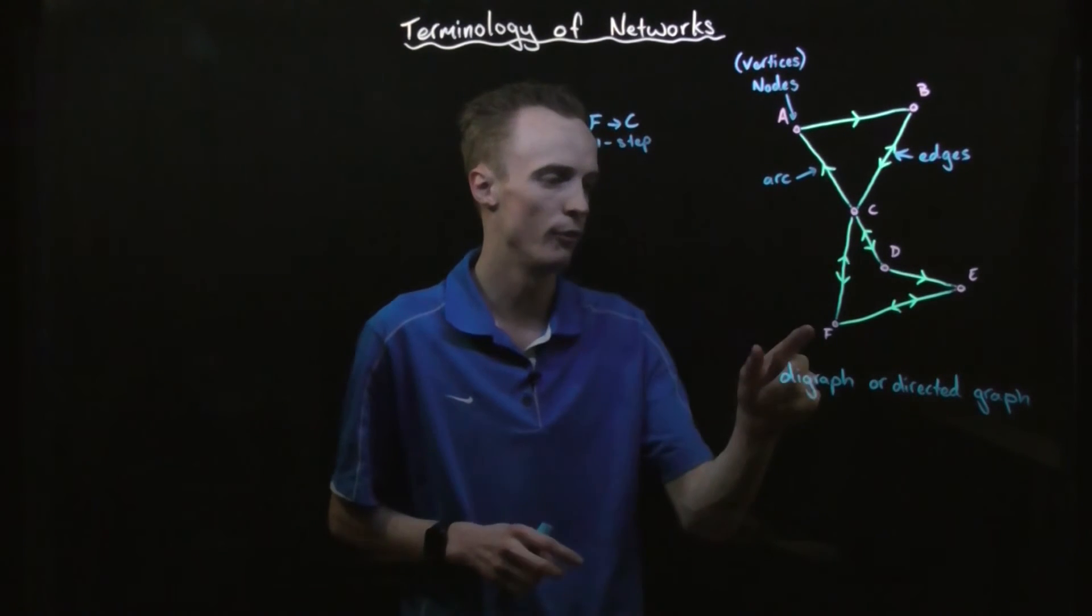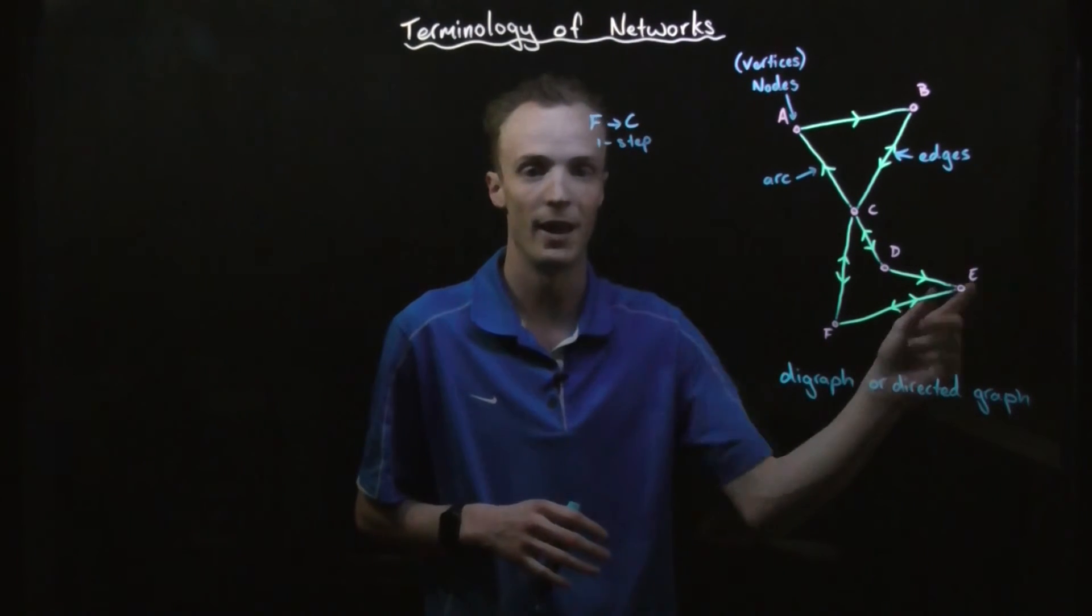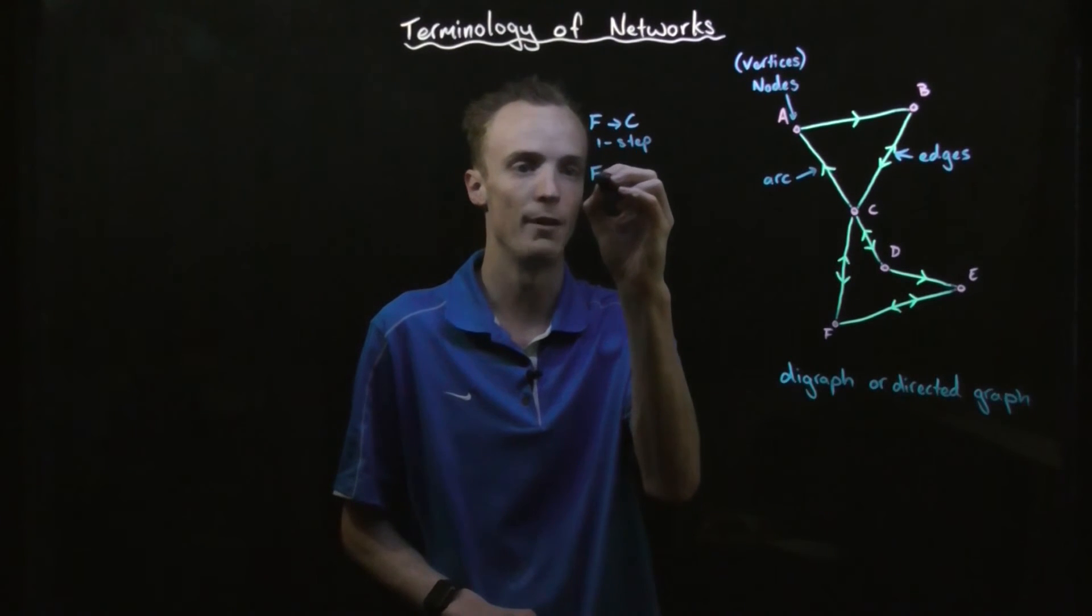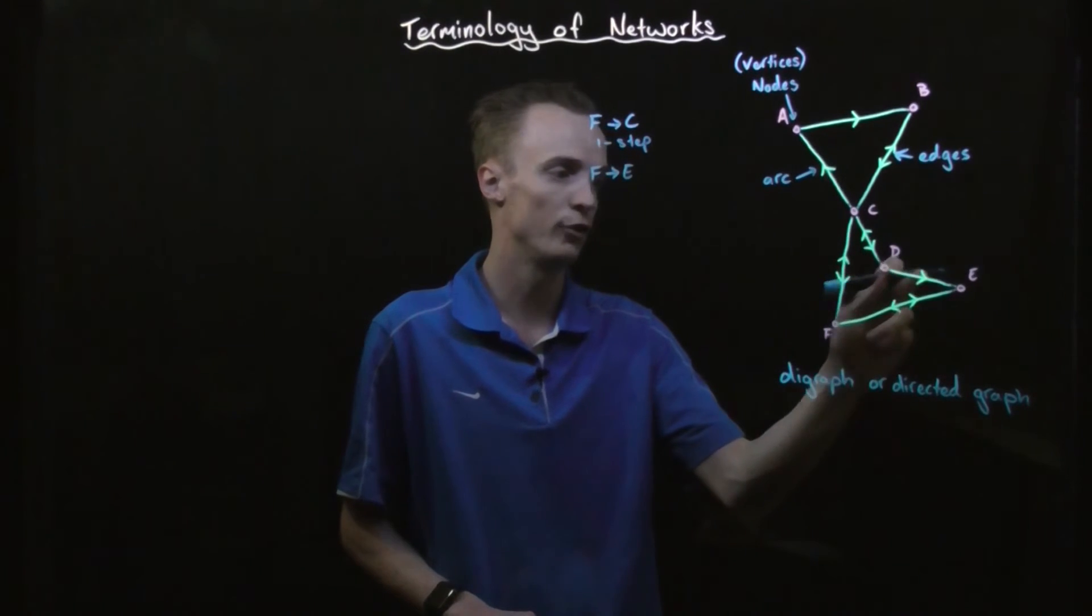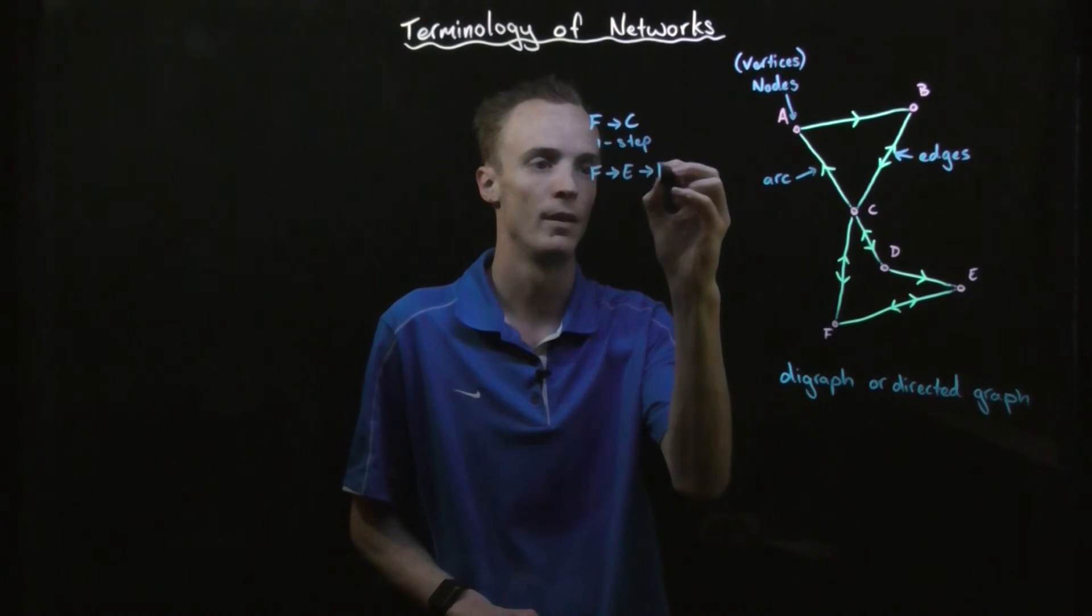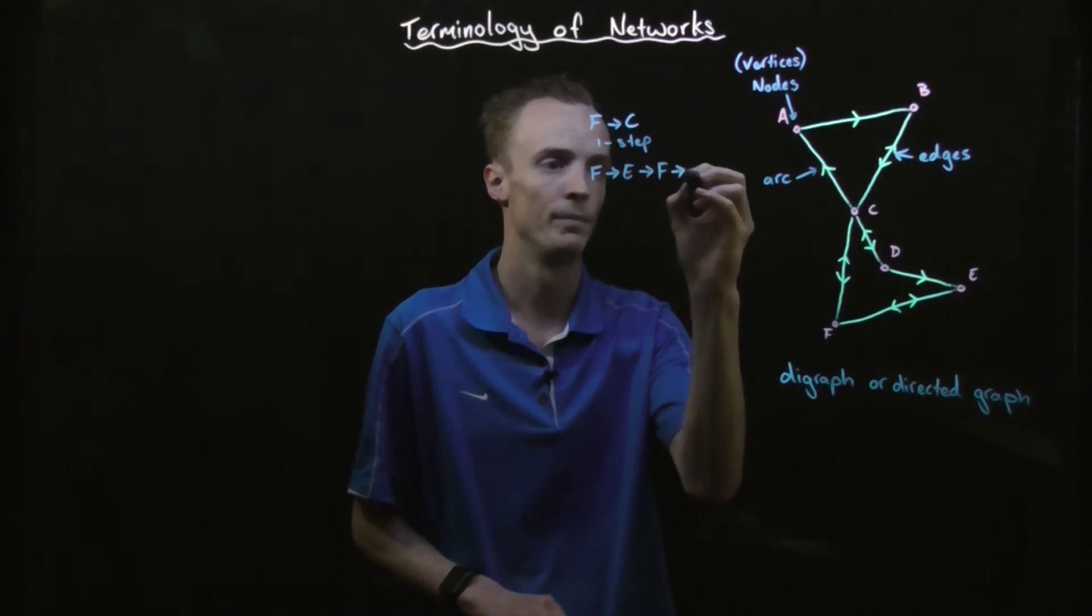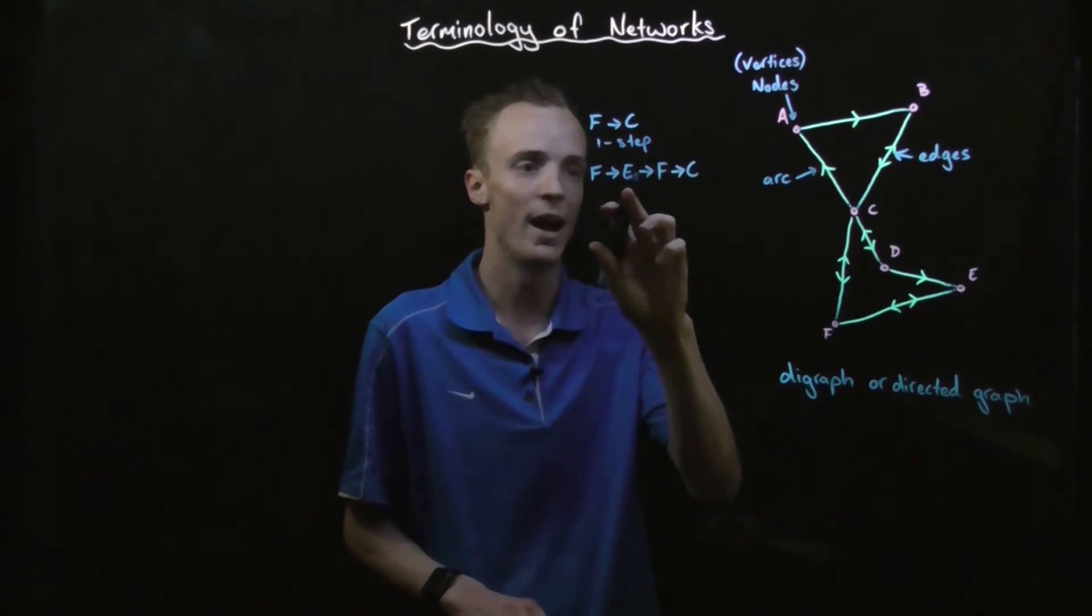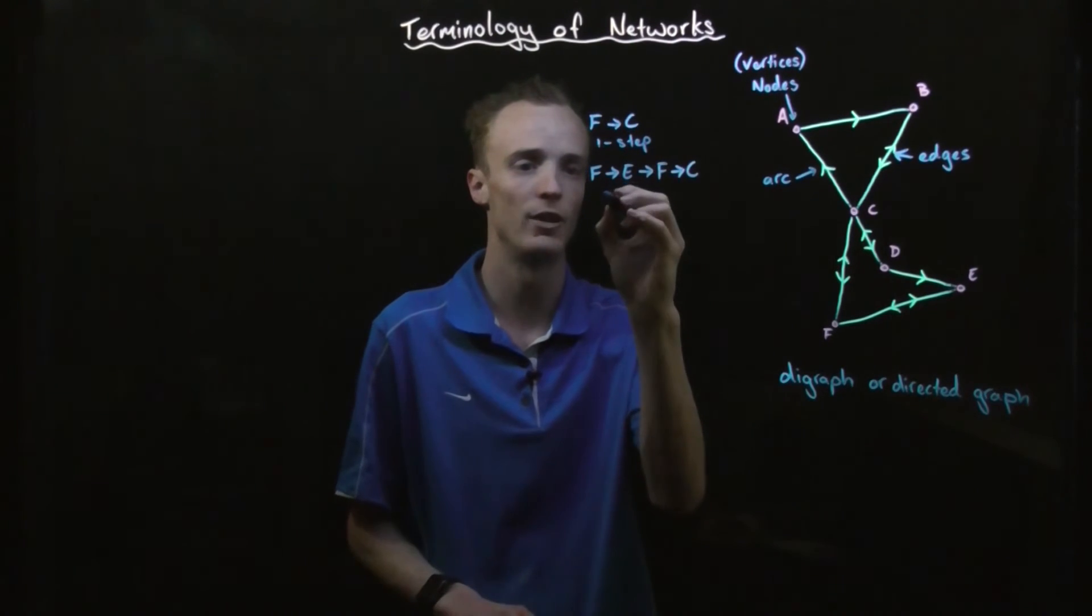Now if we want to travel from node F through to C, but we need to go through node E, one possible journey could be to start from node F, travel through to E, then we'd have to travel back through to F because we can't travel through to D, and then continue on to node C. Now this type of journey we call a three step because there's one, two, three steps in our journey.